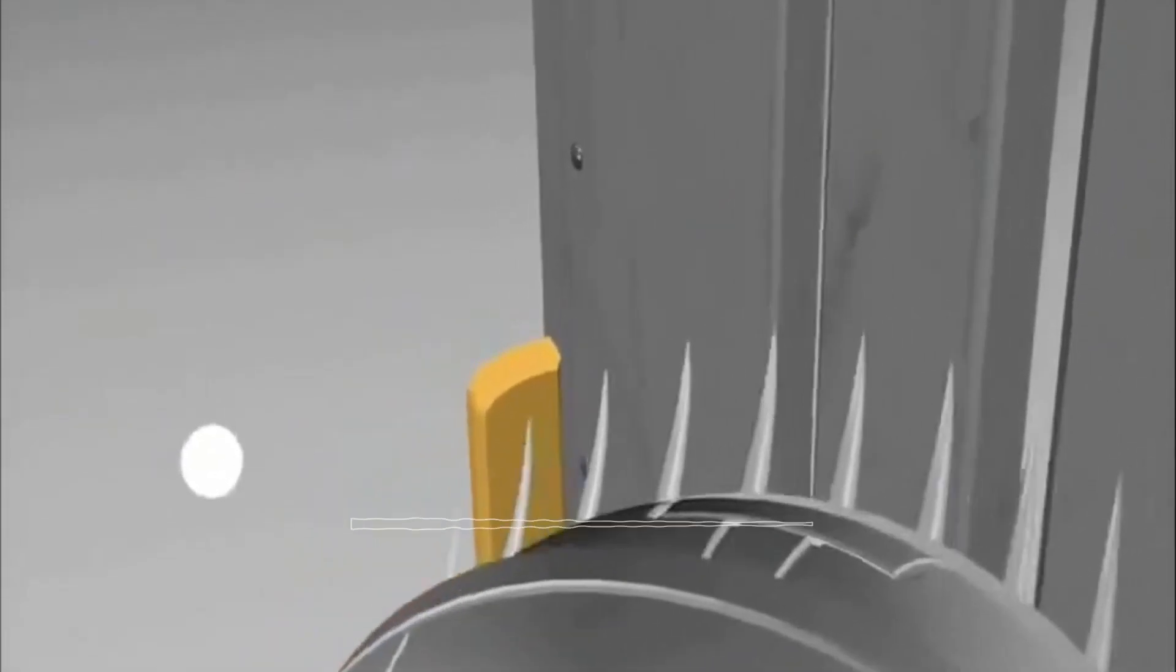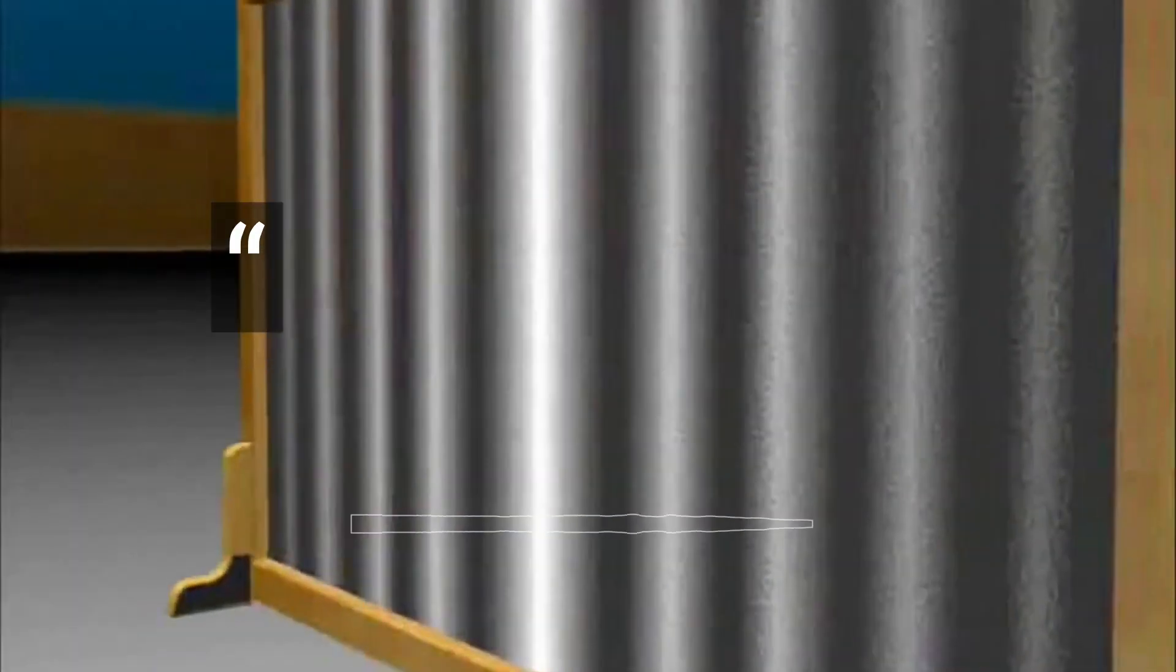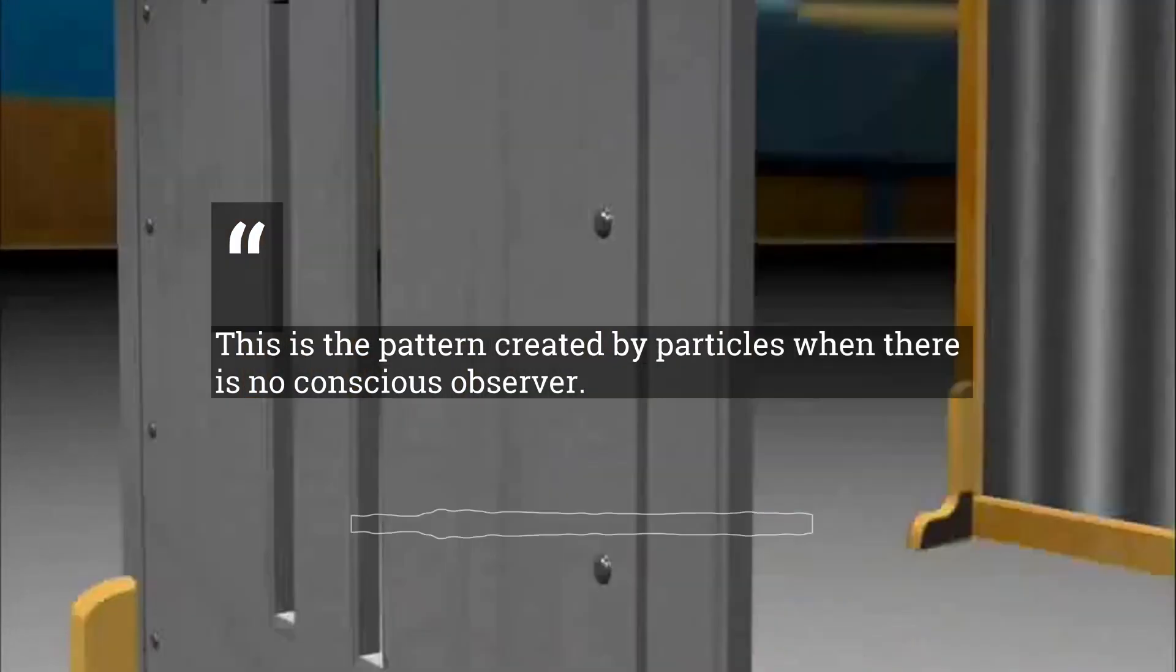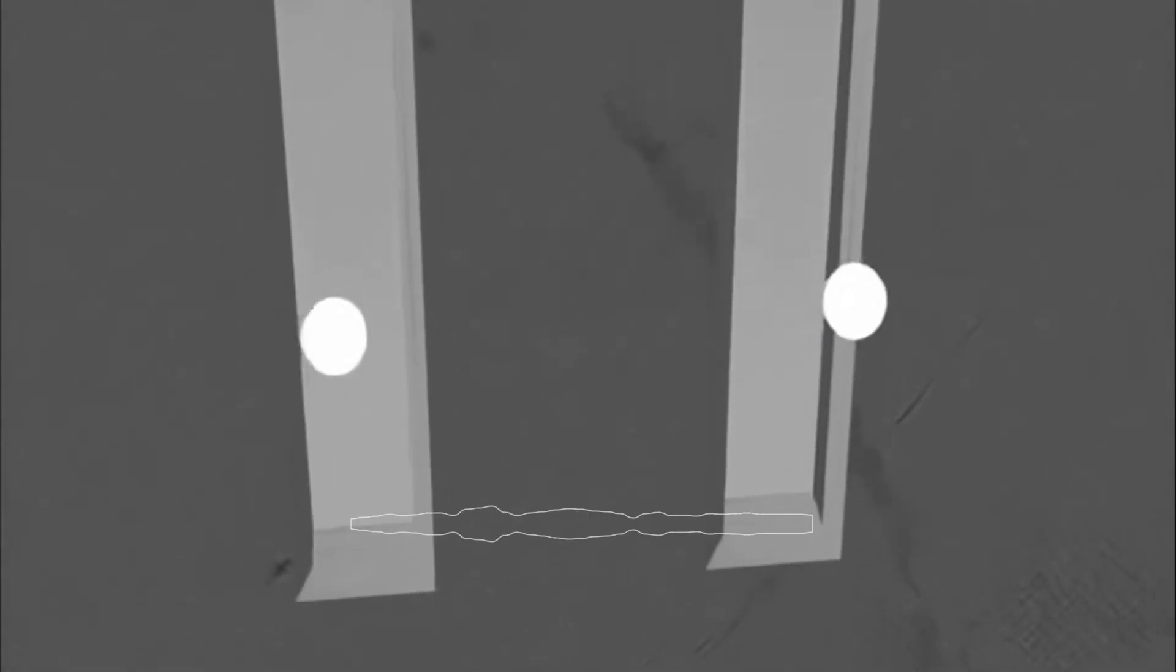So this is why it is interesting. When a conscious observer is not there to observe the experiment and to observe the point in time when the electrons or protons move through those slits, the interference pattern of a wave is formed.